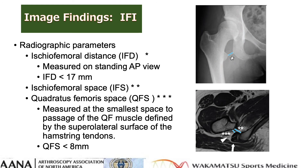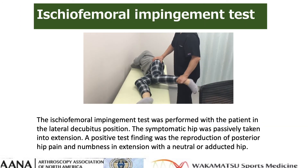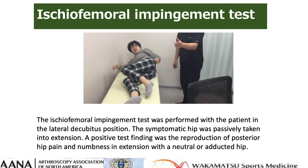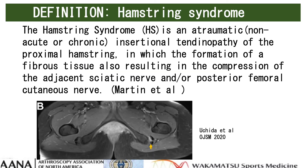Radiographic parameters are very useful to diagnose IFI. The ischiofemoral distance is measured on standing AP views; if the IFD is less than 17 mm, and the quadratus femoris space — defined as the smallest space for passage of the quadratus femoris muscle on MRI — is less than 8 mm, IFI should be considered. The IFI test is performed with the patient in lateral decubitus position. The symptomatic hip is passively taken into extension, and a positive test finding is reproduction of posterior hip pain and numbness in extension with neutral or adducted position. Hamstring syndrome is an atraumatic insertional tendinopathy of the proximal hamstrings in which fibrosis formation results in compression of the adjacent sciatic nerve and/or posterior femoral cutaneous nerve.